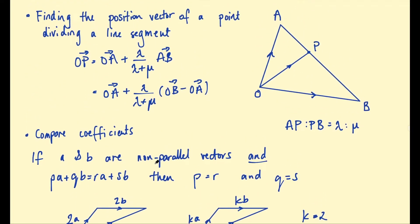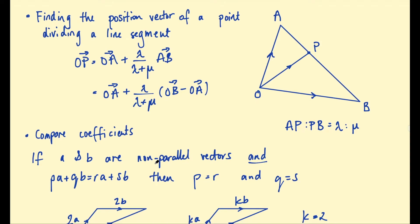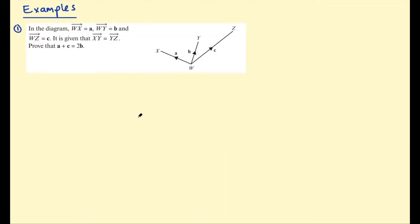These two facts are going to help us with the following problems. For the first example, we're given a diagram and told WX is vector A, WY is vector B, WZ is vector C, and XY equals YZ. The question asks: prove that A plus C equals 2B.